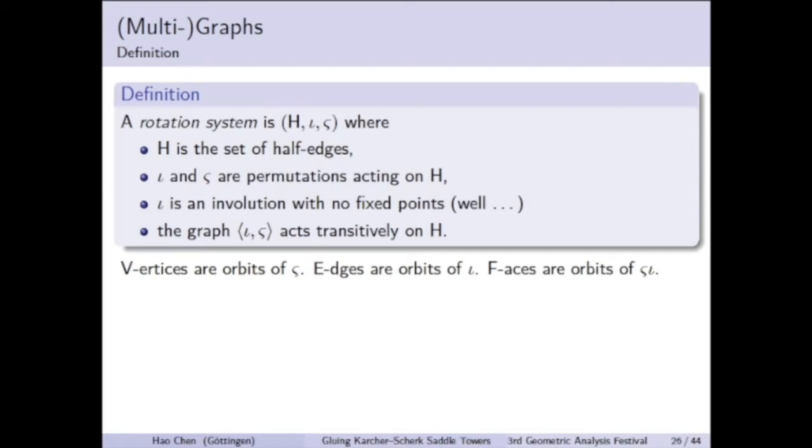I mentioned that to construct singly periodic surfaces, I decided to allow iota to have fixed points. The half-edges fixed by iota are not connected to another half-edge. We will see that half-edges correspond to wings. So if it is not connected to any other half-edge, this wing is left open, hence corresponds to a Scherk end.